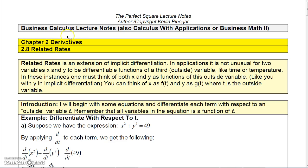In this section we're going to talk about a topic that uses implicit differentiation called related rates. Related rates is an extension of implicit differentiation. In applications, it's not unusual for two variables, say x and y, to be differentiable functions of a third outside variable like time or temperature. In these instances, one must think of both x and y as functions of this outside variable, just like you would with y when you implicitly differentiate.